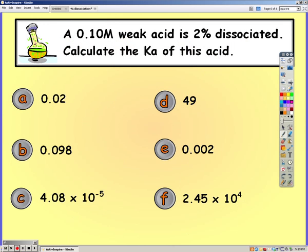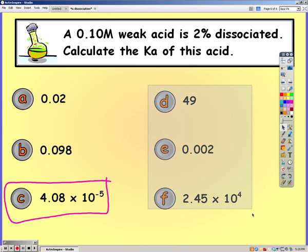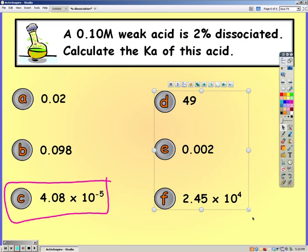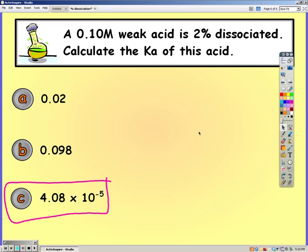Go ahead and pause the video and try this one, which is very similar to the last problem. On this problem, you should have gotten C, 4.08 times 10 to the negative fifth. If you did, then that's the end of the video. If not, then keep going and see where you went wrong.